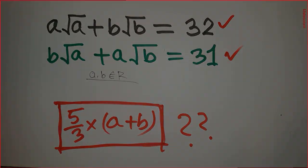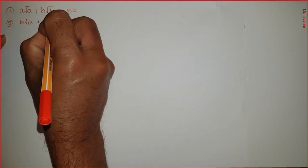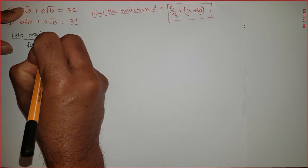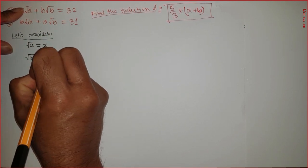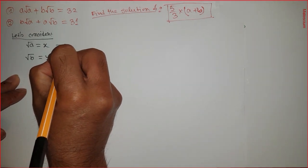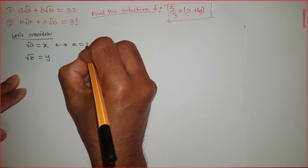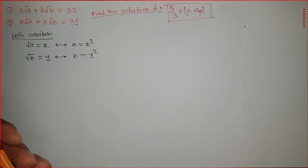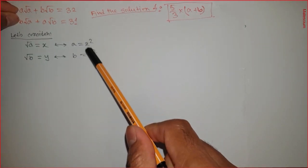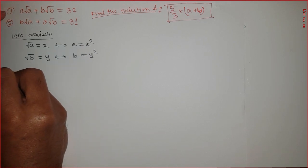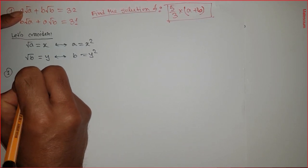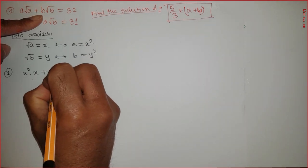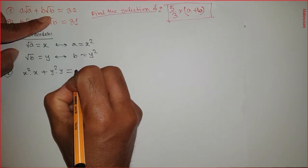To find the solution based on these two equations, let's write the equations again. To make it simple, let's consider square root of a equal to x and square root of b equal to y. That means a = x² and b = y². We can substitute a and b in the equations with x and y. So equation one becomes x² times x plus y² times y, which equals 32.